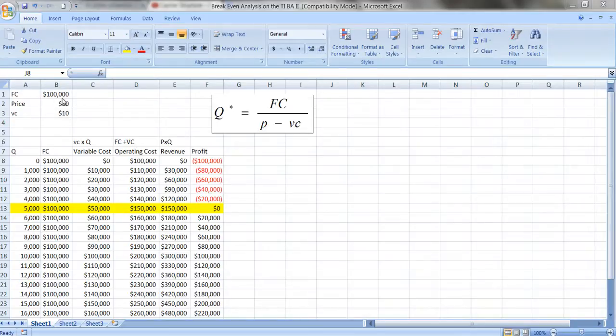The price is $30, and the variable costs are $10. I believe these are the same numbers I used in the previous example. And you'll notice here I have a bunch of different quantities. And you'll notice that the fixed costs remain the same regardless of how much you produce. And that's what fixed costs mean.